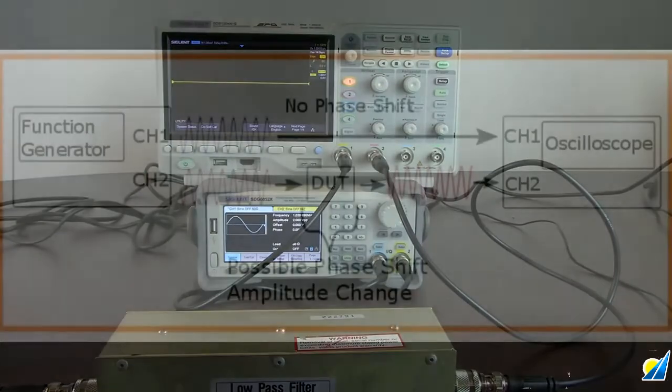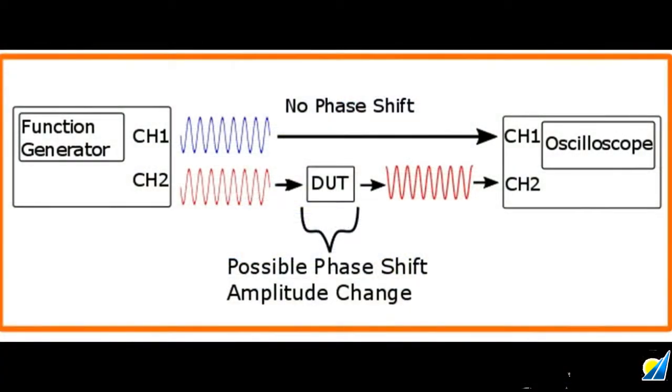So go back to the diagram that we originally had shown. We want to have the source channel look identical to our channel going through the device under test at the beginning, but once it passes through the device under test then we'll be measuring it with the scope and we can see what the effects are. The first part of this test is the electrical configuration.